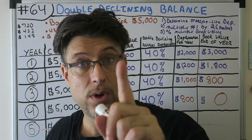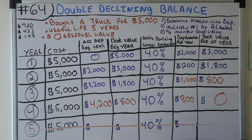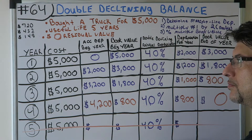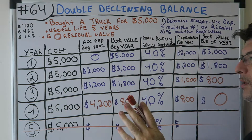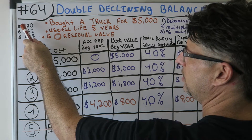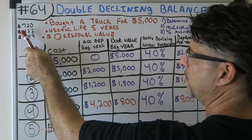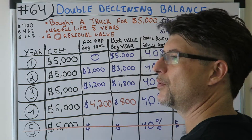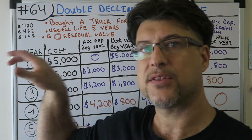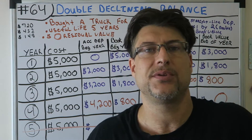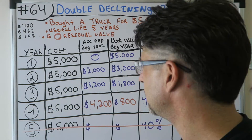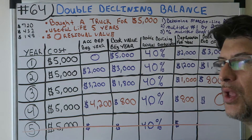Now, in the other example with residual value, we took 720 depreciation one year, 432 another year, and 148 dollars another year — all of those were less than the straight-line amount. Why did I do that? I was just following the percentage to end up with 500 residual value, just to show you as viewers what would happen.